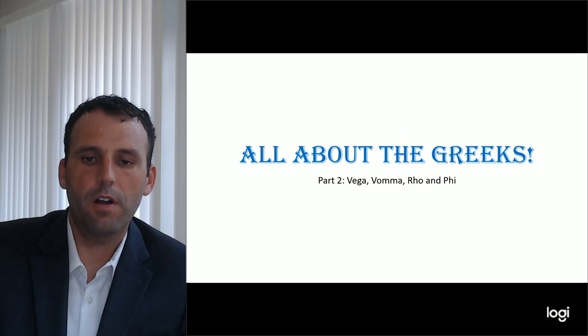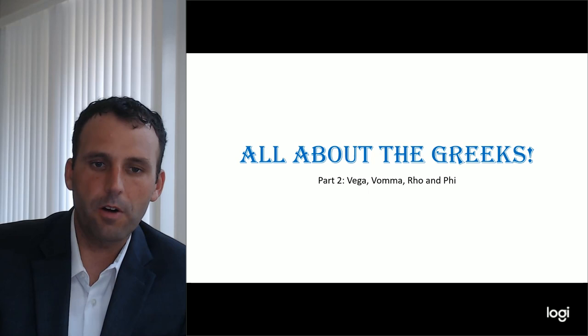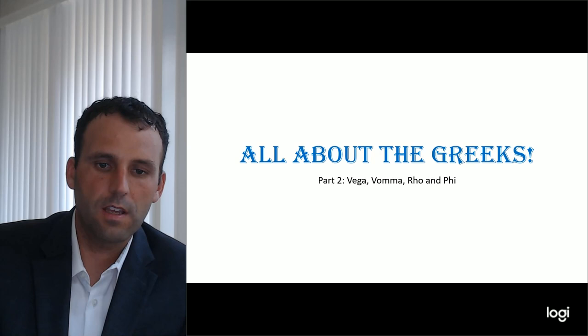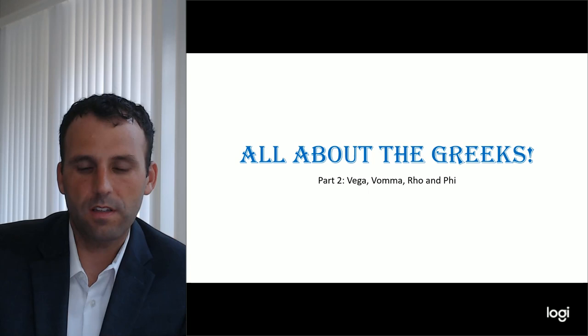Option Greeks are the mathematical functions of the price drivers of put and call options contracts. In the first part we covered delta, gamma, and theta — which are the change in price with a change in stock price, the change in delta with the change in stock price, and the change in the option value with time, or time decay.